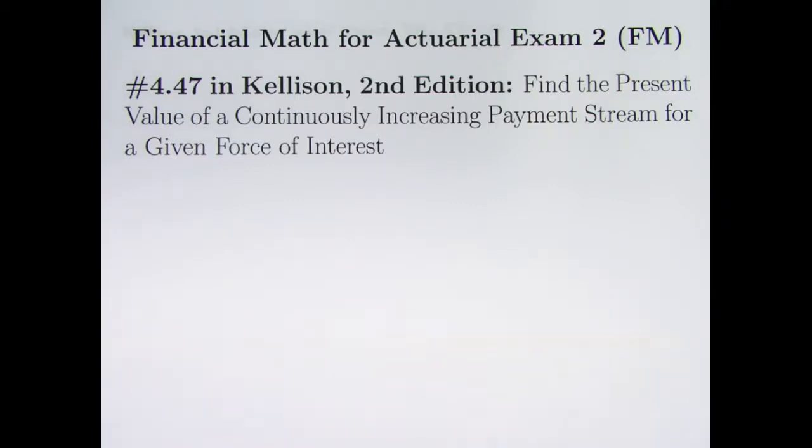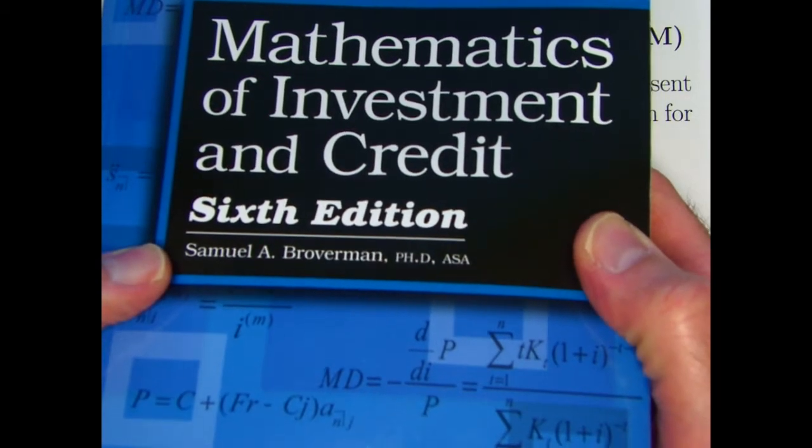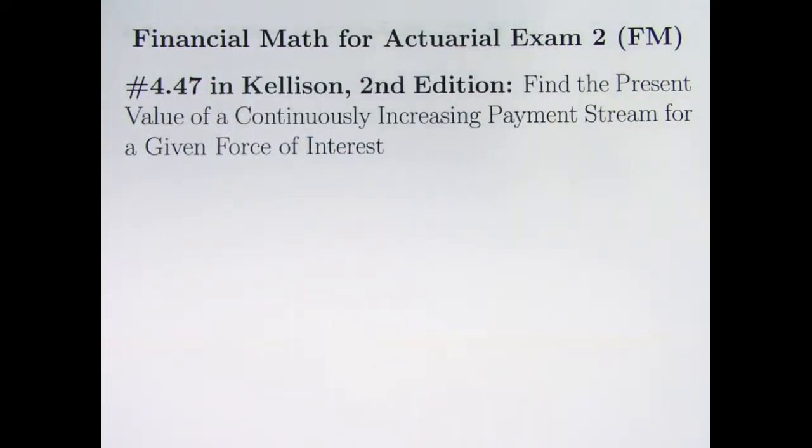Hello. In most of my problem-solving videos on Actuarial Exam 2, we do problems from the Mathematics of Investment and Credit, 6th edition by Samuel Brogerman. But as happened in Chapter 1, I found the content here now at the end of Chapter 2 to be kind of sparse as far as problem sets related to continuous annuities.